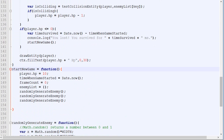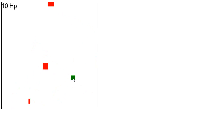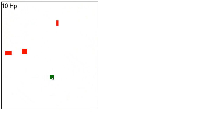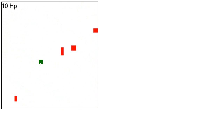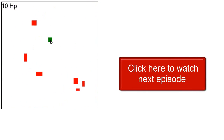So now let's check how it looks. If we refresh the page, we got our 3 enemies. After 4 seconds a 4th one will spawn. If we die, the whole grid will be regenerated and we start back with only 3 enemies. I hope you liked it — don't forget to click the annotation on the screen if you want to check out the next episode.